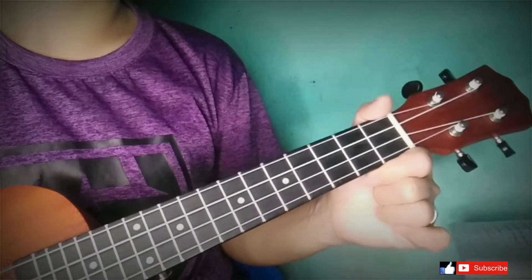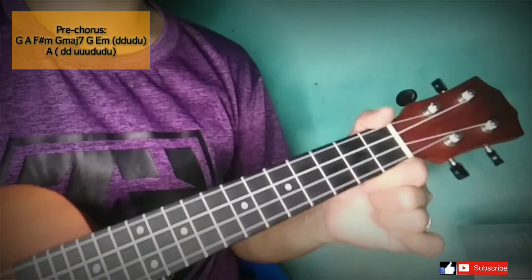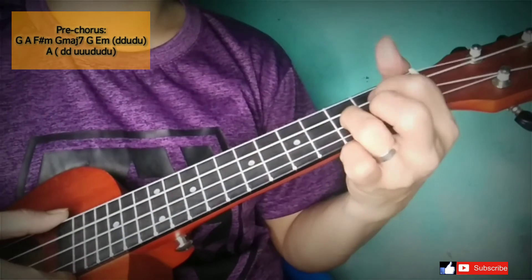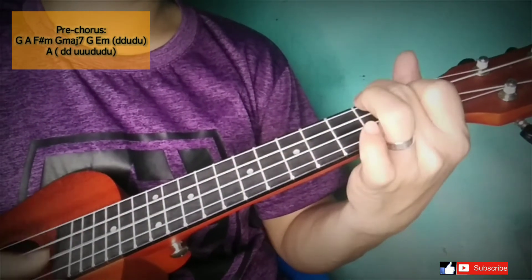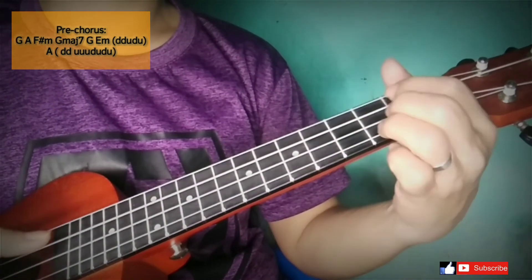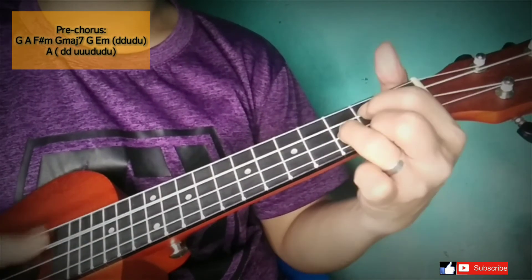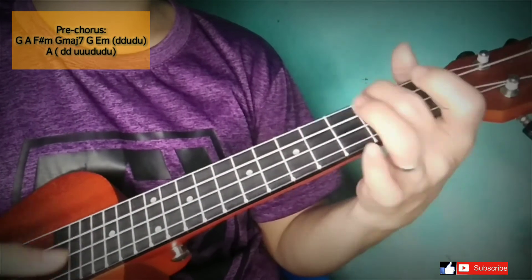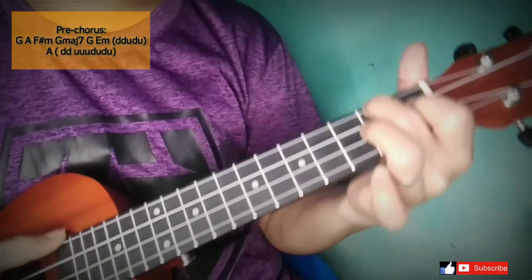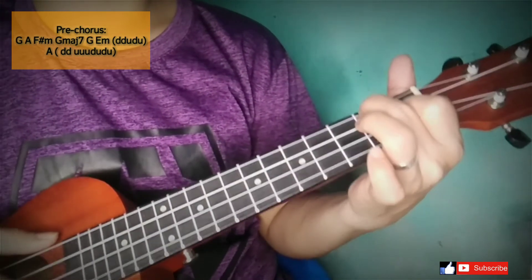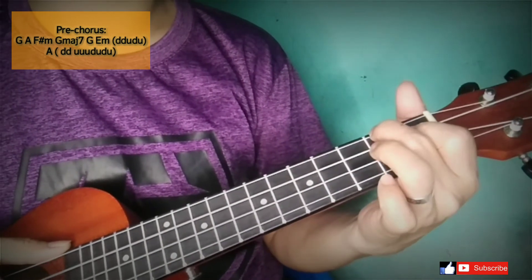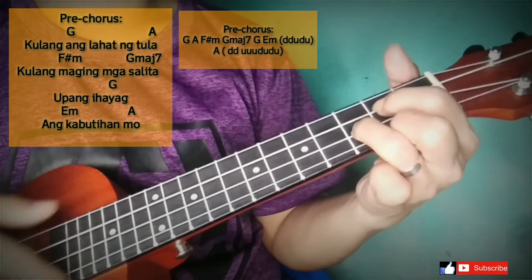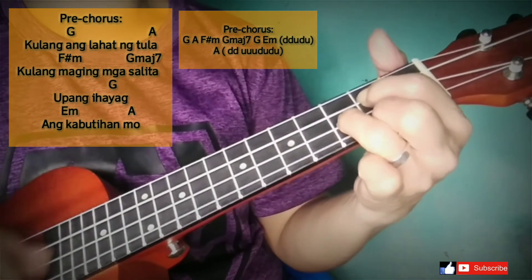That's verse 1. For the pre-chorus, the chord progression is G, A, F sharp minor, G major 7, G, and E minor. The strumming pattern for those chords is down, down, up, down, up, and for the last chord it's down, down, up, up, up, down, up, down, up. I'll play it slowly.